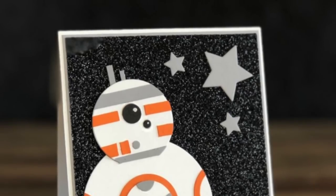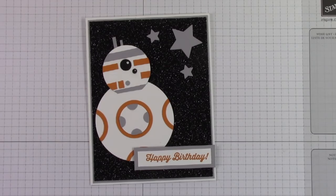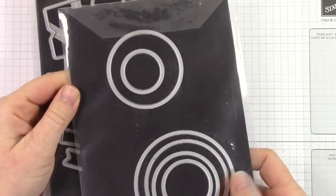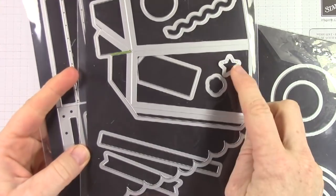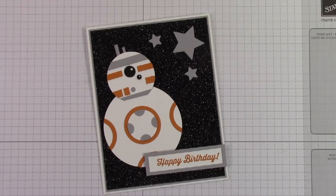However, I am surrounded by Star Wars fanatics, obsessors, weirdos, whatever. So this is sped up. We're going to use this layering circle framelits, the little star and the big star from Wood Crate and Popcorn Framelits.